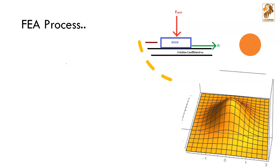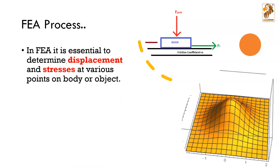First, let us understand what the FEA process is. Finite element analysis works on two basic things: the first one is displacement and the second one is stresses. For example, if I have a book and I try to push it from top to bottom and also pull it, a friction force FT is acting. FEA first tries to figure out how much displacement there will be, and then according to the displacement, it figures out how much stress is produced.